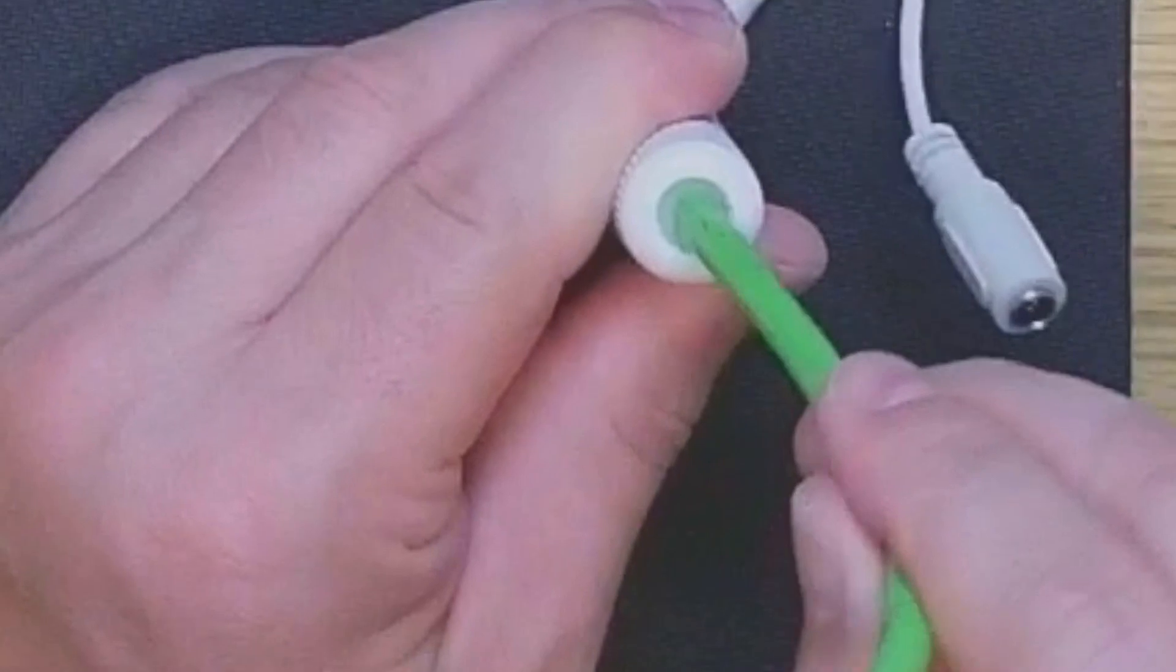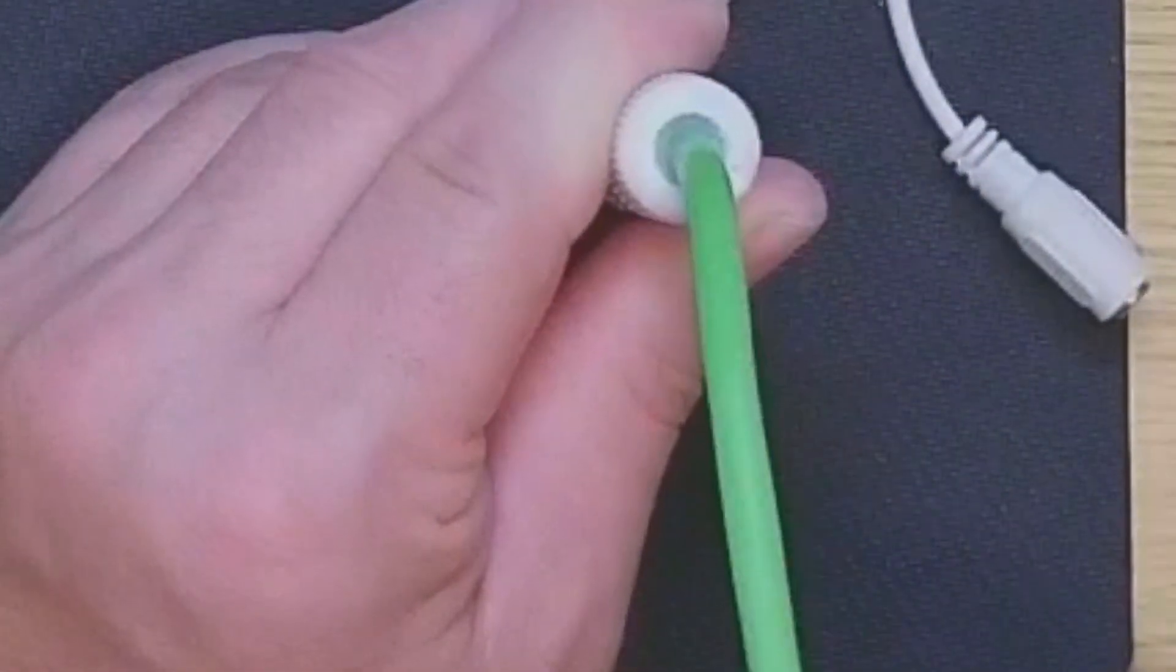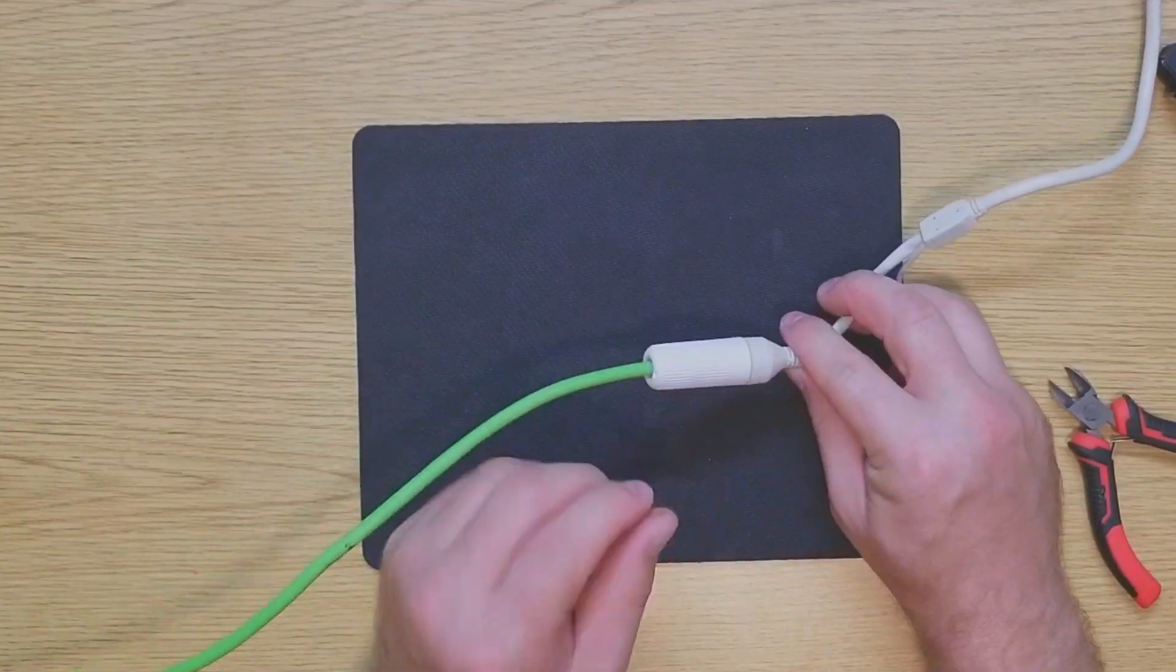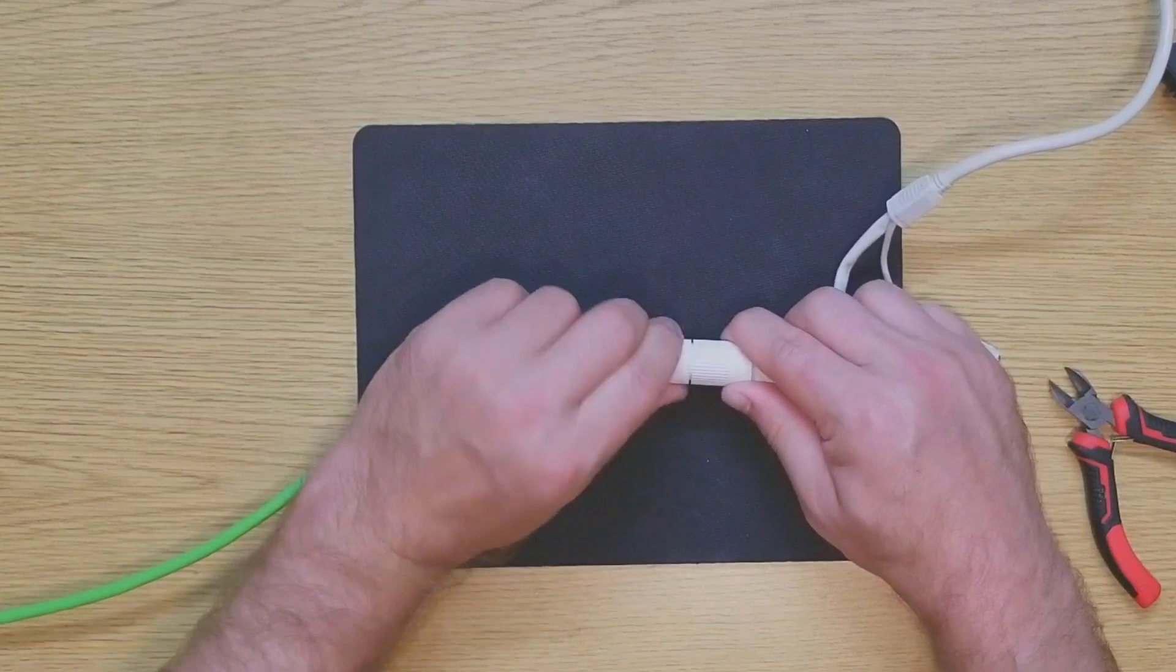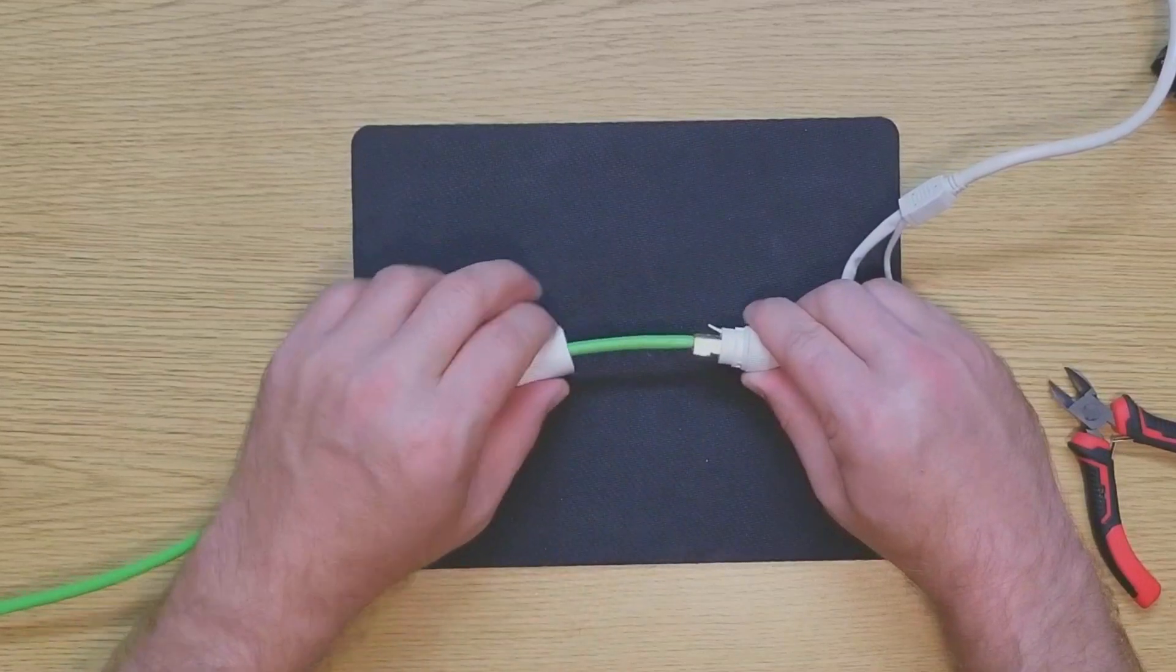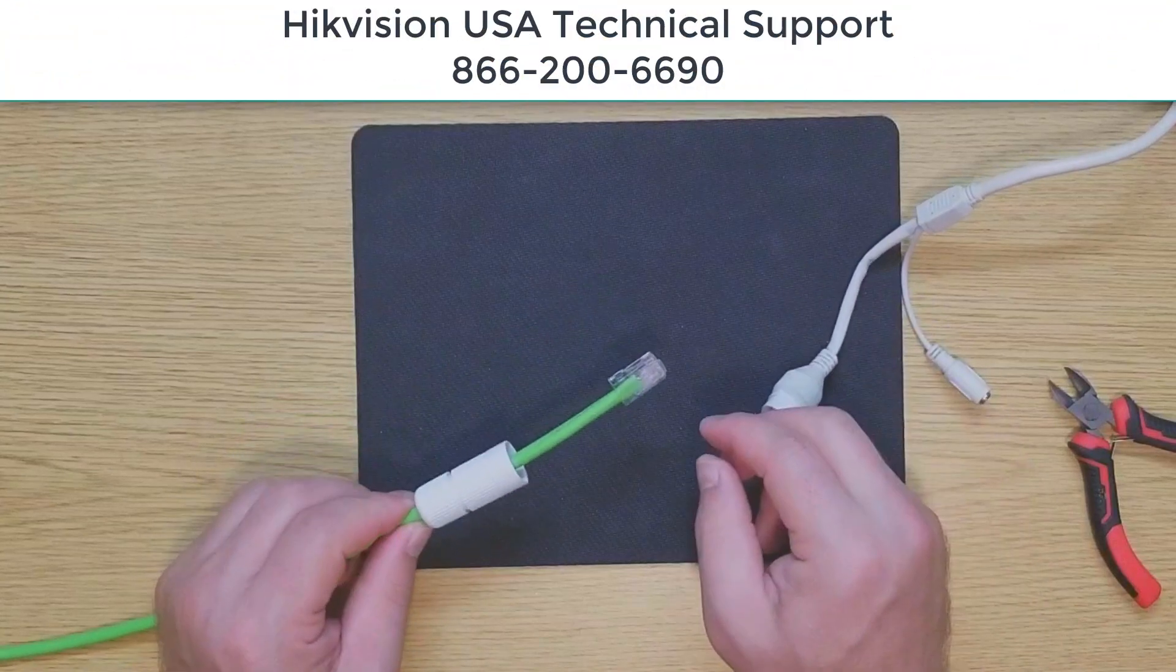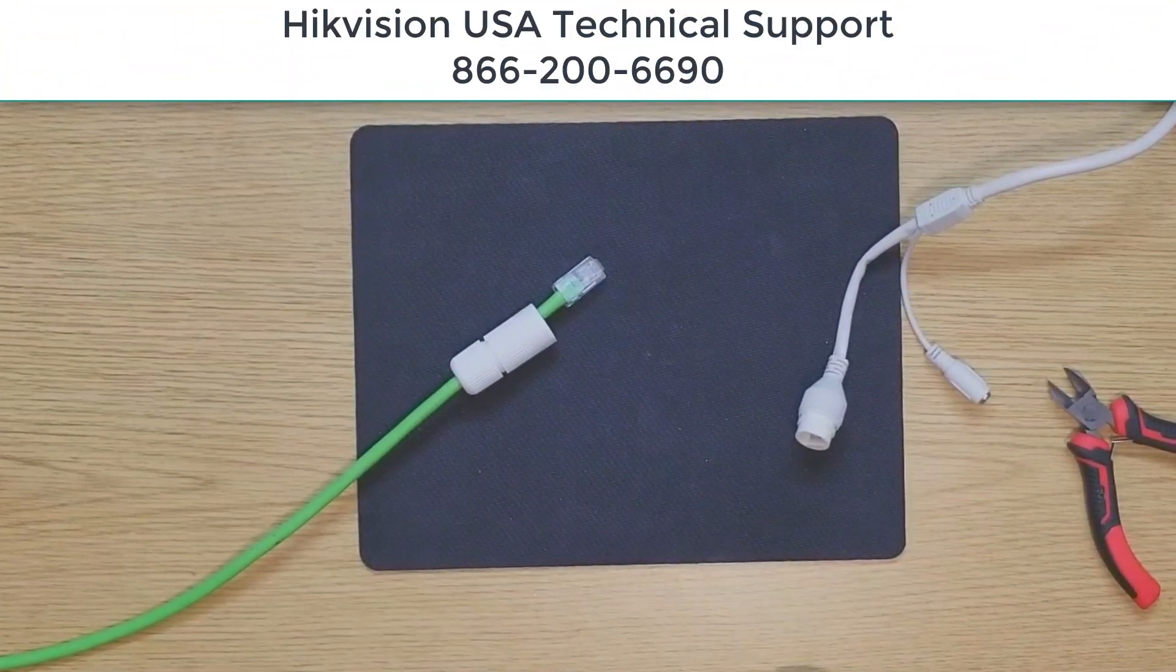If you need to take the connector apart for maintenance purposes, simply unscrew the cap a few turns, and then undo the quarter-turn twist lock and slide the whole assembly back. You can go ahead and remove the RJ45 connector, and that's it - you're done. Congratulations! If you have any questions, feel free to call technical support.